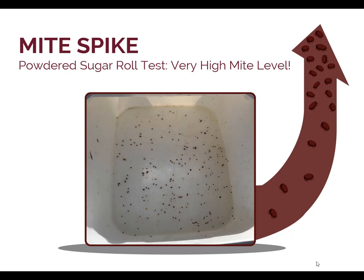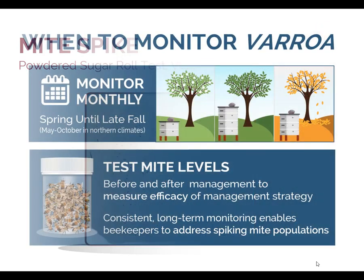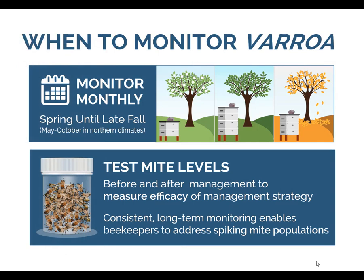This photo shows mites taken from a sample of 300 bees. Beekeepers want to prevent spikes in mite levels. Even if the beekeeper can manage to dramatically reduce the mite level, the pathogen spread by mites may make a colony sick. Beekeepers should manage mites in colonies regardless of whether or not they expect the colony to die, in order to prevent mites from infesting other colonies. It is recommended that beekeepers monitor Varroa at least once per month throughout the beekeeping season. It is important to test colonies for Varroa infestations before and after a management strategy or intervention in order to evaluate if the strategy was effective. Consistent, long-term monitoring enables beekeepers to predict and address spiking mite populations.